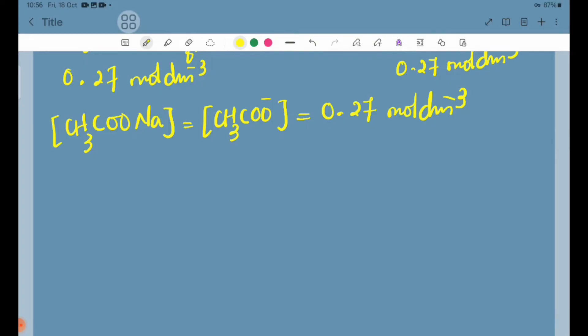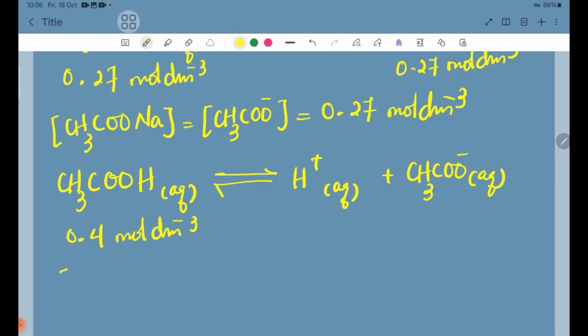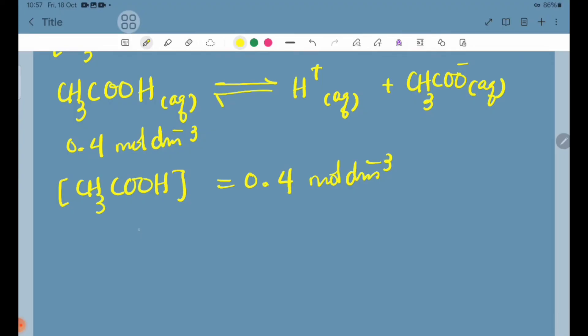The CH3COONa completely ionizes in solution. The equilibrium equation is CH3COOH reversible reaction equals H plus aqueous plus CH3COO minus. The concentration of CH3COOH is 0.4 mol per dm³.